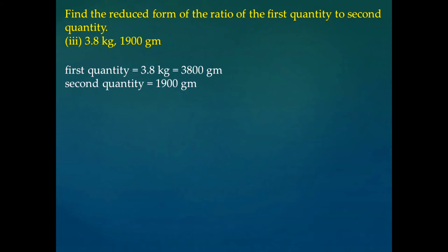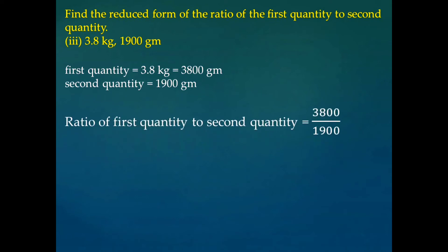And the second quantity we will take as it is, that is 1900 grams. As these two quantities now are in the same unit, we can find their ratio. The ratio of the first quantity to the second is equal to 3800 divided by 1900. If we divide these two, we will get the ratio as 2 divided by 1, that is 2 is to 1.